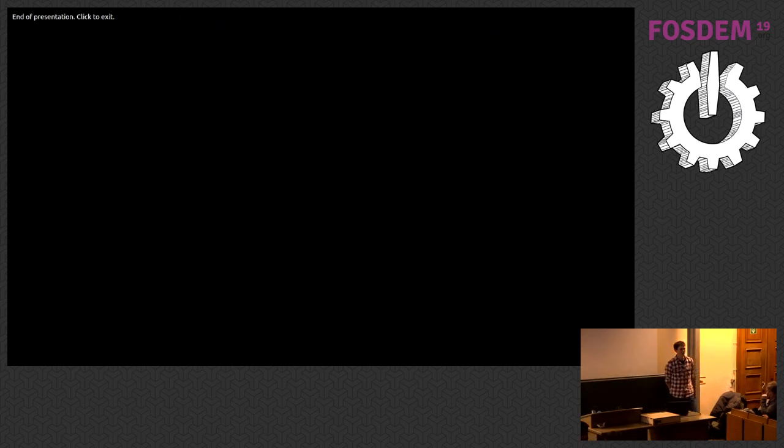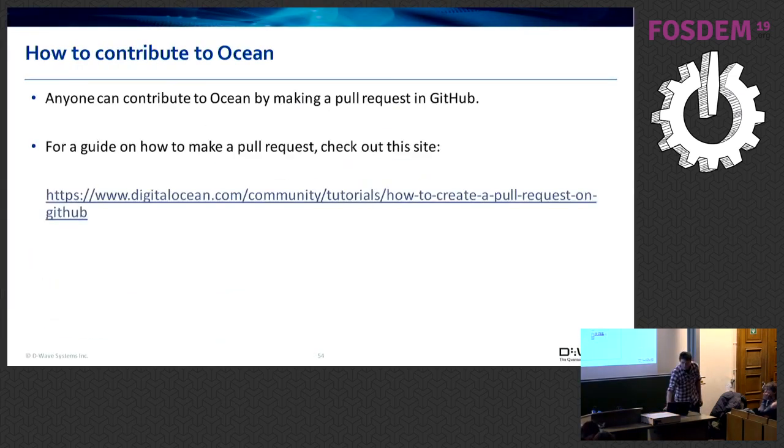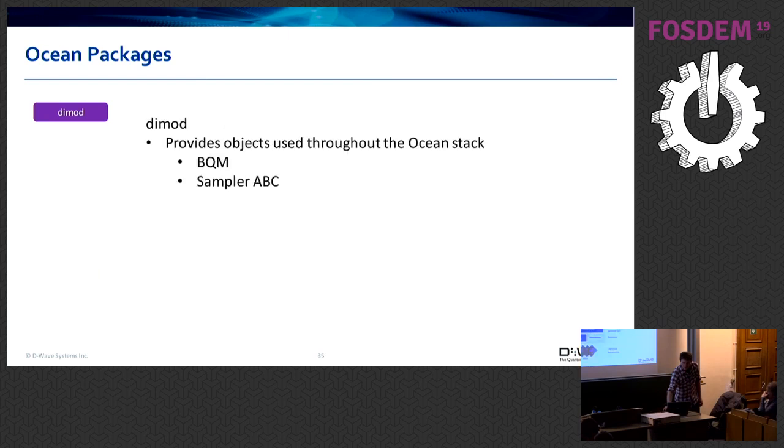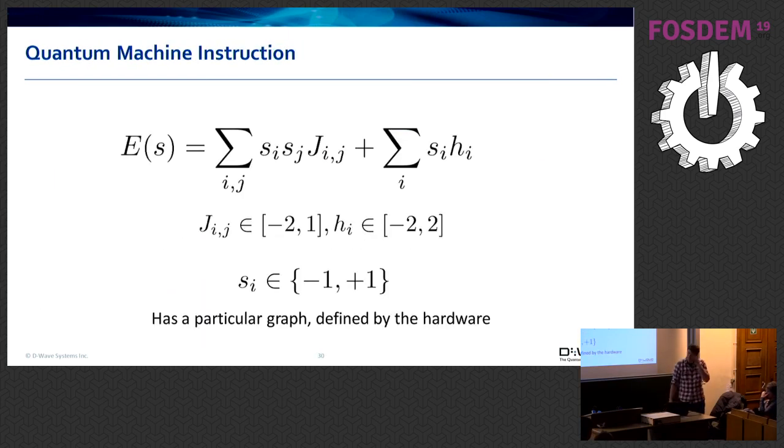All right. So I think we have maybe like ten minutes for questions? Do we have any questions? So the biases in your QPM function have some limited range? Will this improve in the next releases of the quantum computer? So the question was, our quantum machine instruction has limited range associated with the biases. And so the question is, is that a hardware limitation? And will that improve with the next version of the QPU? So the answer is yes, it's absolutely a hardware limitation. And yes, it will improve with the next implementation of the QPU.